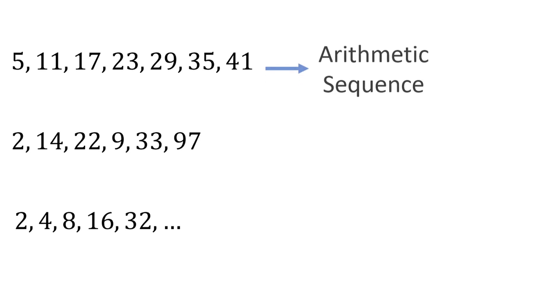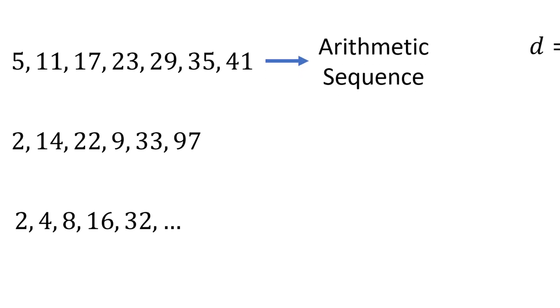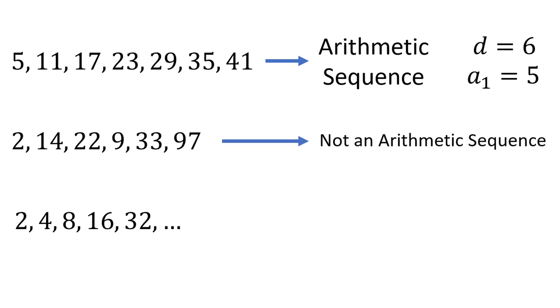Here are a few more sequences. The first one is arithmetic, with a common difference of d equals 6 and a first term of a sub 1 equal to 5. This is also a finite sequence, as there are a set number of terms. The second one has no apparent pattern and is definitely not an arithmetic sequence. The third one is also not an arithmetic sequence, as there is not a common difference between terms.